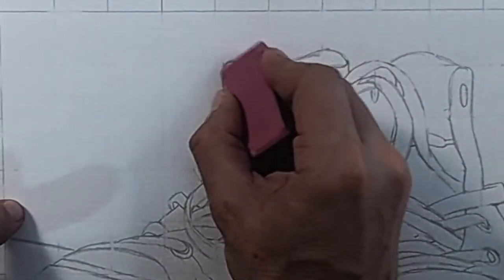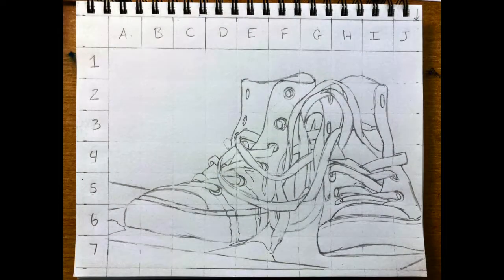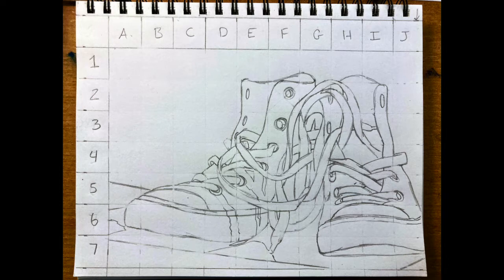Remember, if you've drawn your grid lines lightly, they'll completely erase. That's it. This is the completed line drawing. The next step will be to add value according to a value scale. Thanks for watching.